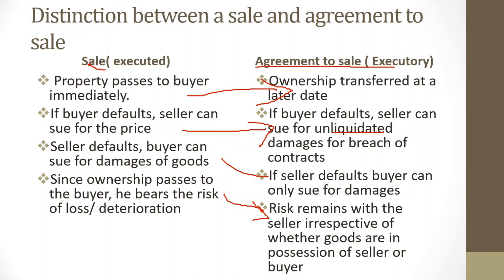These are the distinctions between a sale and an agreement to sell. Looking at the words themselves, under a sale you have immediate ownership, while under an agreement to sell you are in the process of agreeing, meaning ownership will pass at a later date.